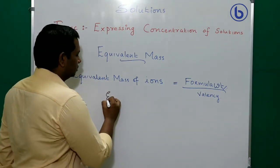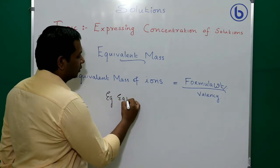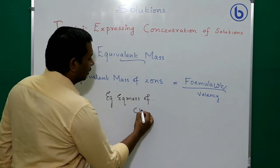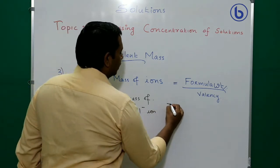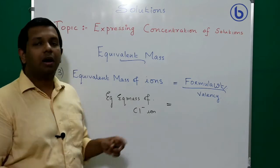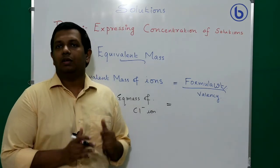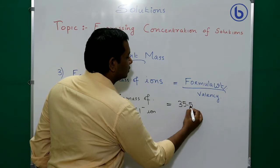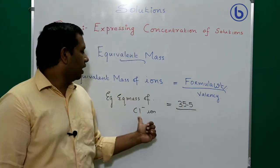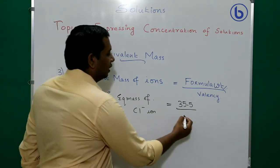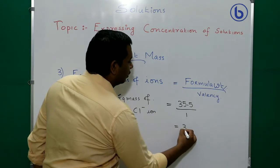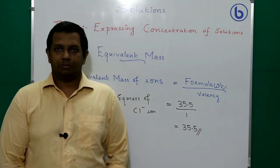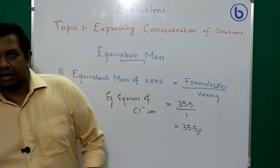Example: equivalent mass of Cl⁻ ion. The formula weight is just the mass of chlorine = 35.5 (charge has no mass). The valency of chlorine is 1. Therefore, equivalent mass of Cl⁻ = 35.5 ÷ 1 = 35.5.